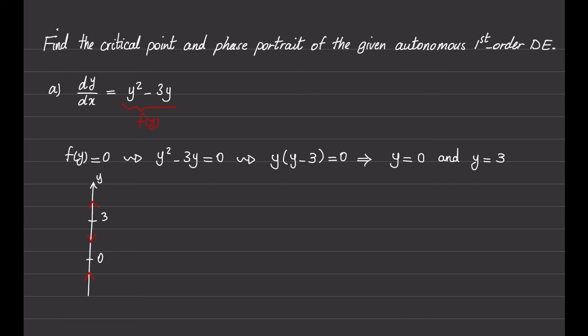For the first critical point y equals 0: for values greater than it, the function is negative; for values less than it, it's positive. So everything is going towards the critical point of 0. We will call y equals 0 an attractor, and also we can say that y equals 0 is a stable critical point.